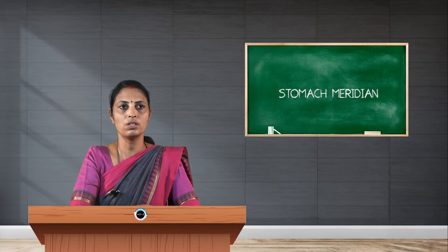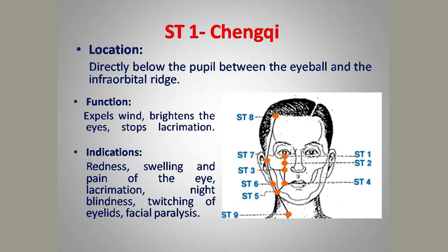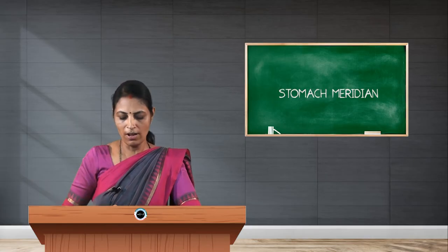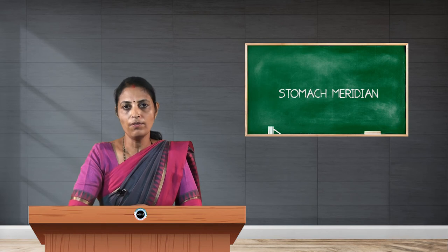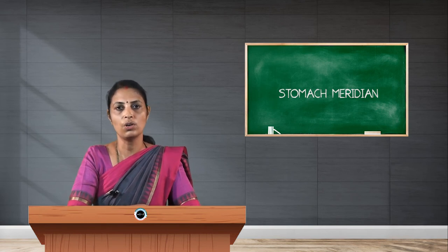Stomach 1, Chengqi, is located directly below the eyeball at the midpoint of the infra-orbital ridge. Its function is to expel wind, brighten the eye, and stop lacrimation. Indications include redness, swelling, pain in the eye, lacrimation, night blindness, twitching of the eyelid, and facial paralysis. The needling depth is not more than 0.5 cun and the direction is horizontally downwards.